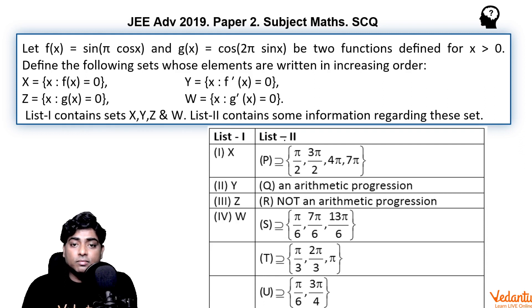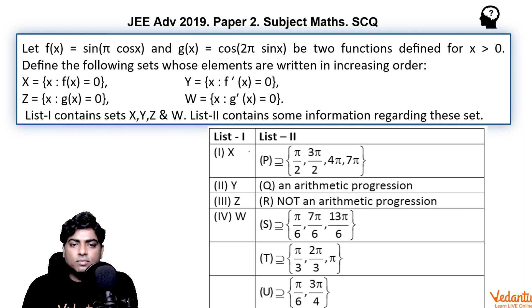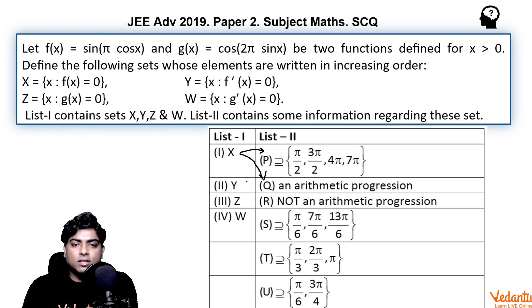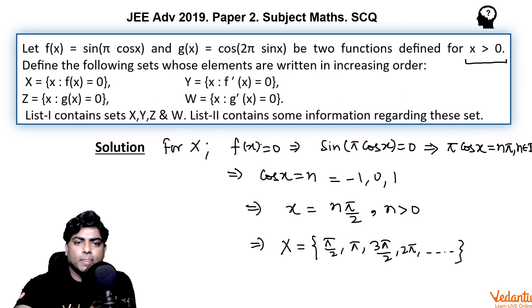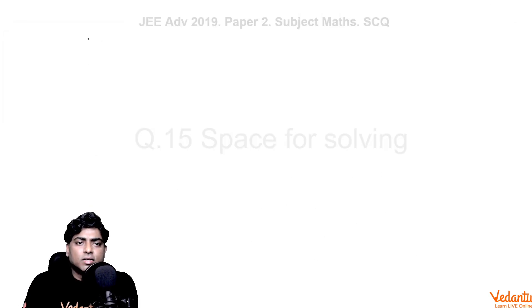Looking at entry P in List 2, values like π/2, 3π/2, 4π, 7π all belong to set X, so entry 1 (X) clearly matches with P and Q.